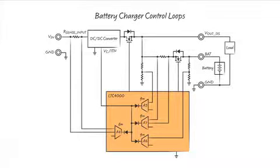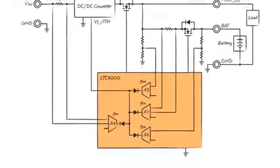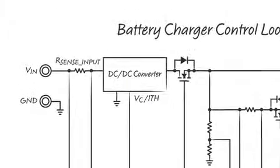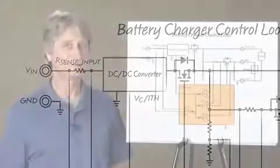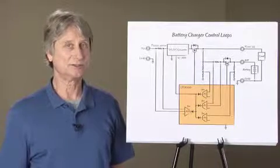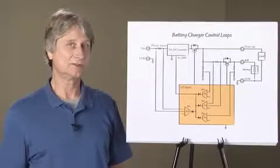The LTC4000 has four error amplifiers that can regulate battery voltage, charge current, system voltage, and input current. These are ored together and connected to the control pin, typically VC or ITH, of the DC to DC controller. It works with any switch mode DC to DC converter topology and is compatible with many controllers.